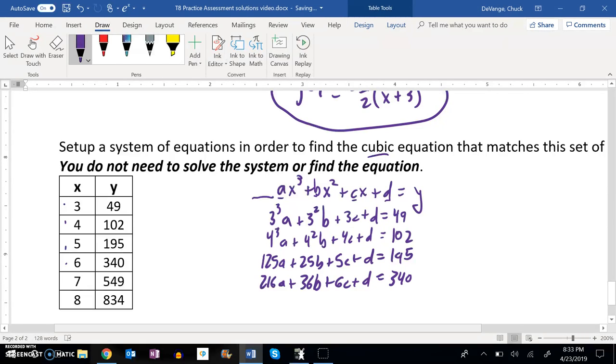Let me go back and clean these up. 3² is 9. 3³ is 27. 4³ is 64. And 4² is 16.